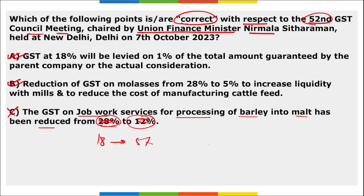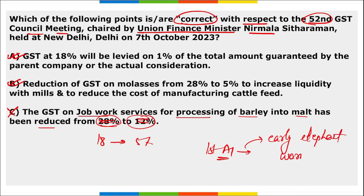Which state recently launched the first AI-based early elephant warning system to prevent elephants from causing havoc in rural areas? It was launched by Tamil Nadu — the first AI early elephant warning system.